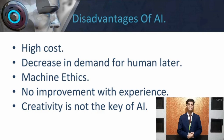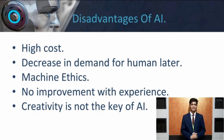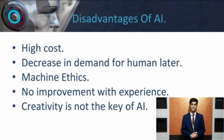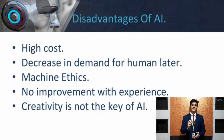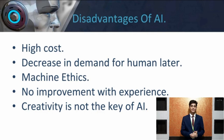Our next point is a decrease in demand for human labor. This is one of the riskiest disadvantages and can have a severe effect in the future. If human beings don't upgrade their skills, they could get replaced by machines. Our next point is machine ethics. No matter how smart a machine becomes, it can never replicate a human. Machines are rational but very unhuman, as they don't possess any emotions or moral values. They don't know what is ethical and what is legal, and because of that they don't have their own judgment-making skills.